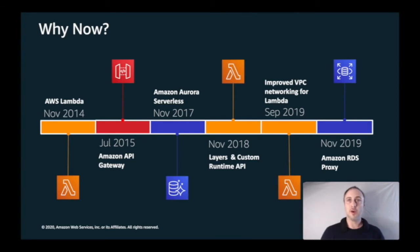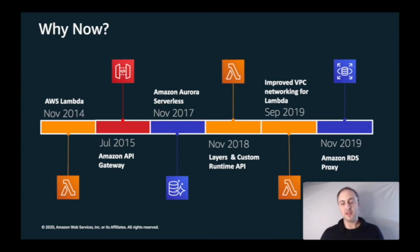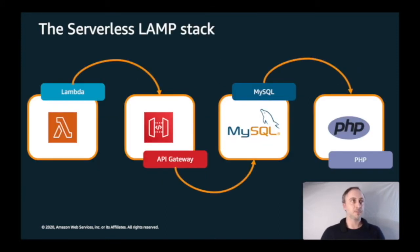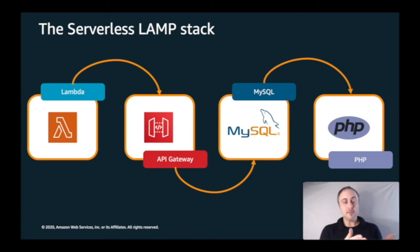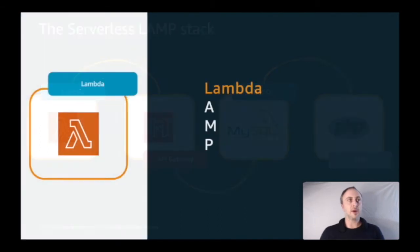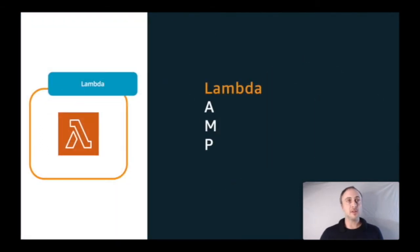RDS Proxy is a highly available database proxy for RDS databases. It makes applications much more scalable and more resilient to database failures when building with relational databases. This brings us to the serverless LAMP stack — Lambda, API Gateway, MySQL, and PHP — where Linux is replaced with Lambda and Apache is replaced with API Gateway.